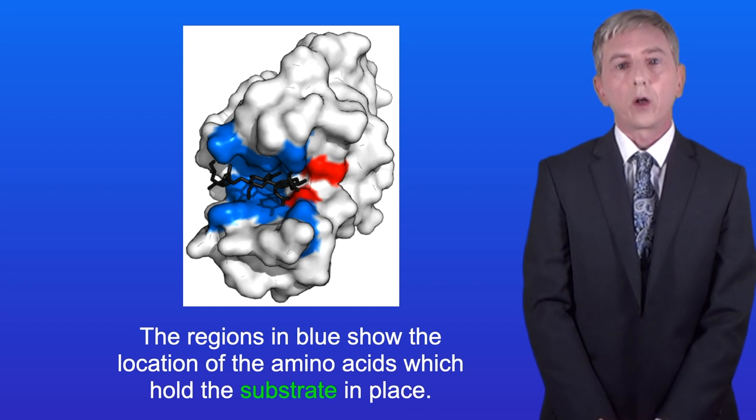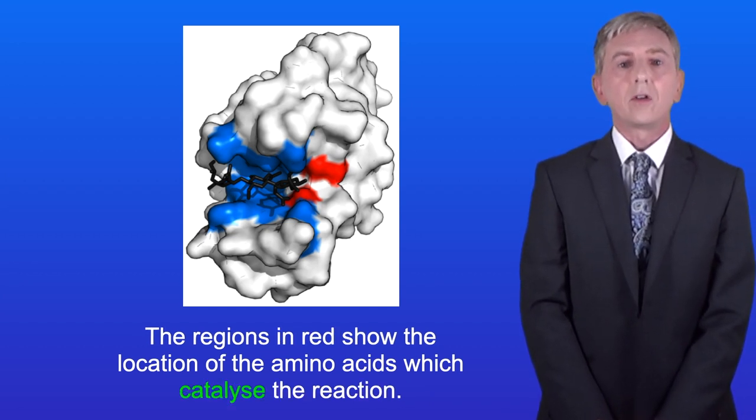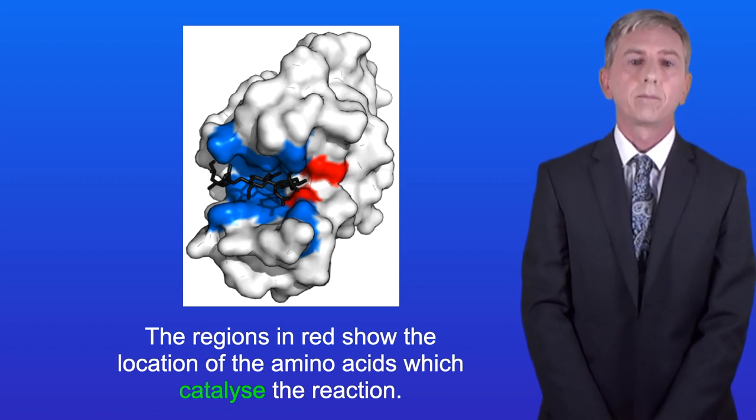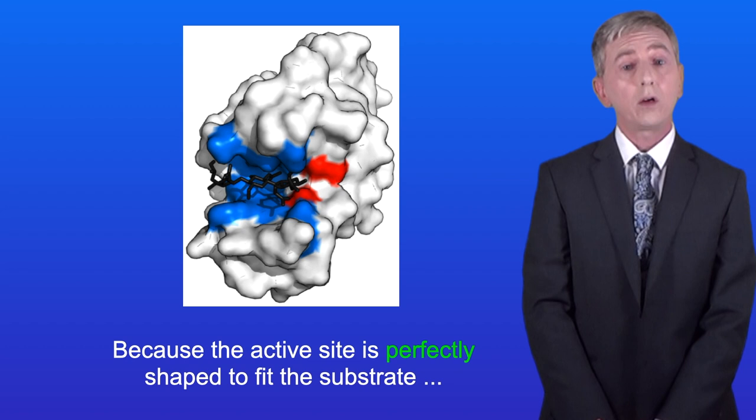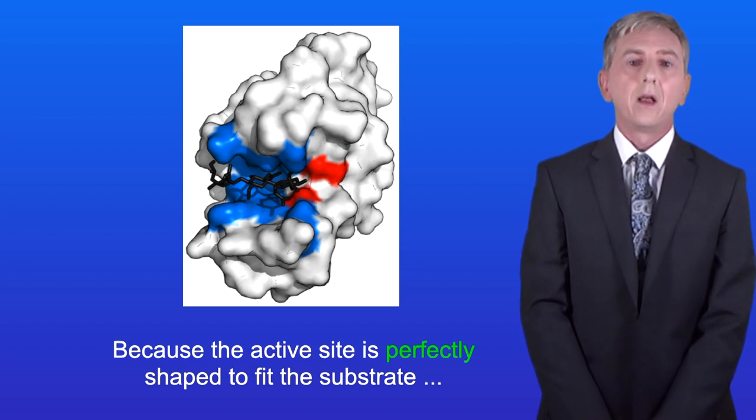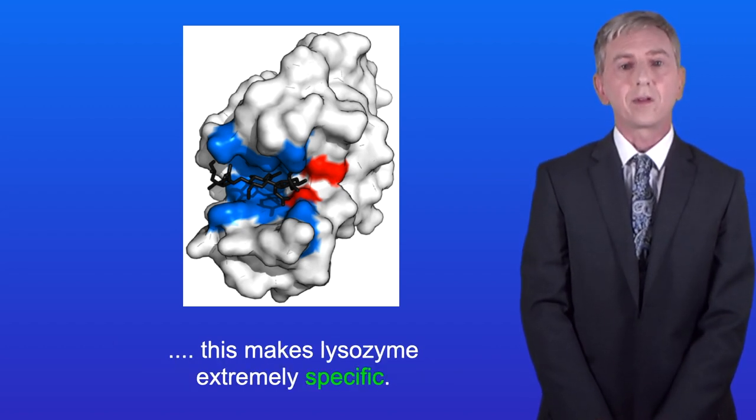The regions in blue show the location of the amino acids which hold the substrate in place, and the regions in red show the location of the amino acids which catalyse the reaction. Because the active site is perfectly shaped to fit the substrate, this makes lysozyme extremely specific.